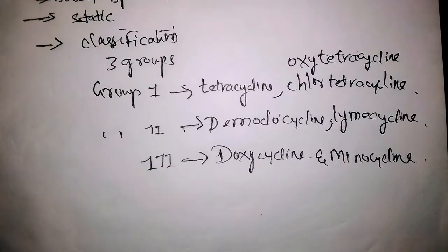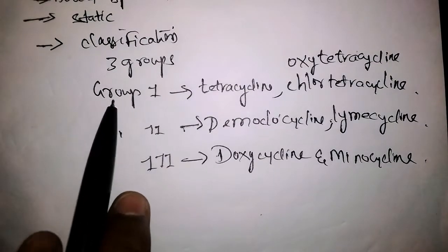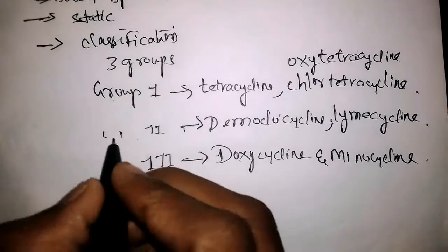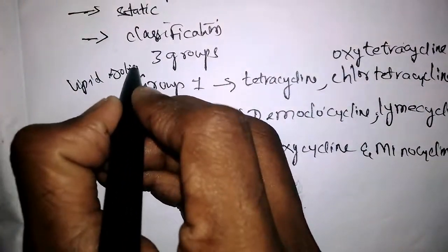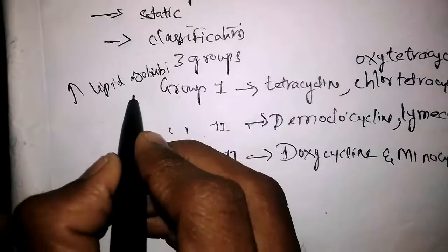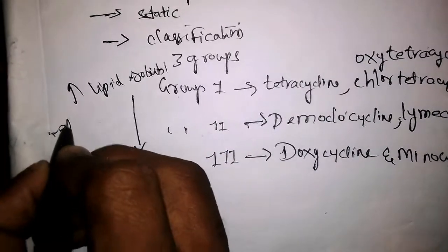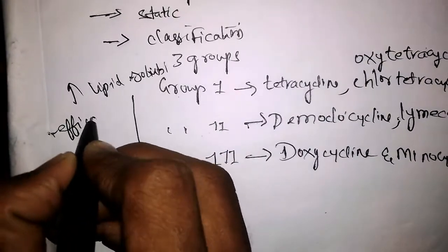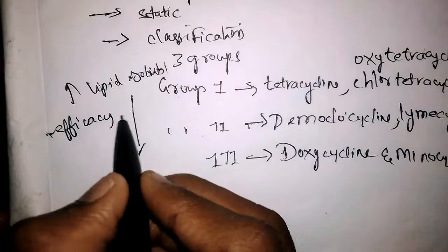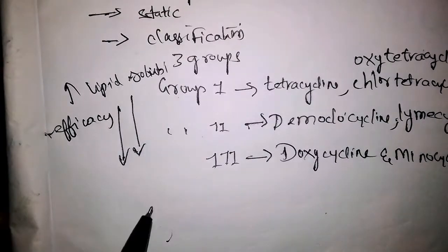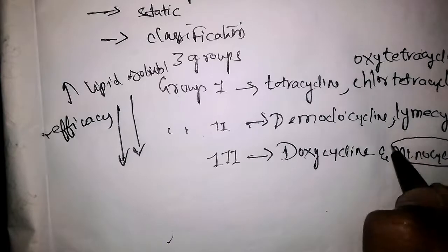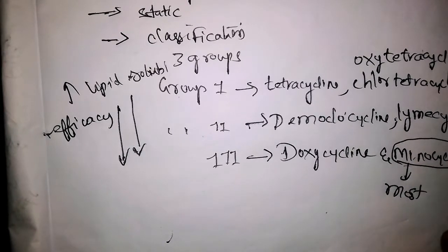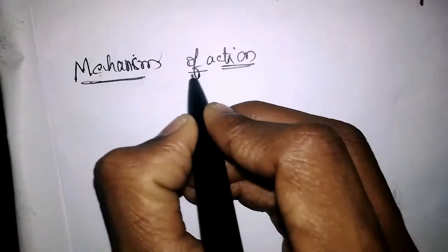As we go down these groups from group one to group two to group three, lipid solubility increases and efficacy also increases. Remember, minocycline is the most potent tetracycline.